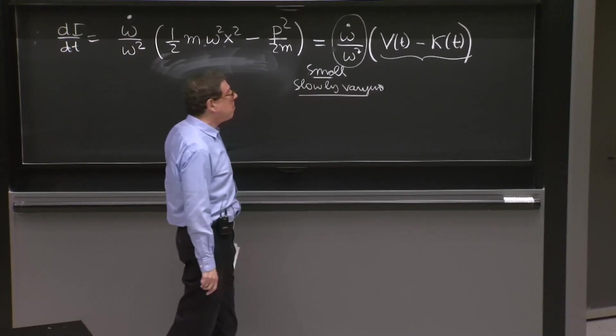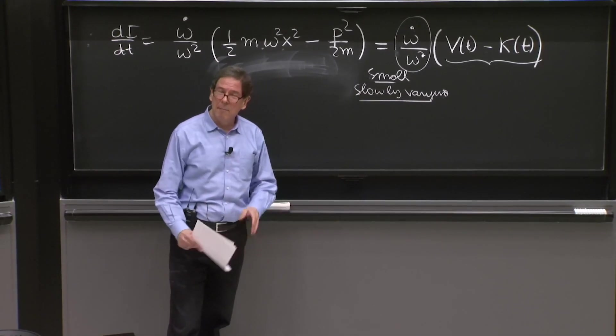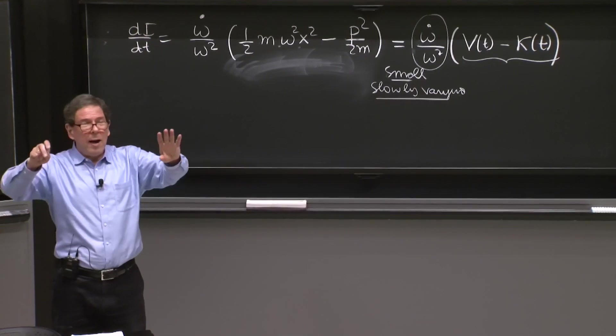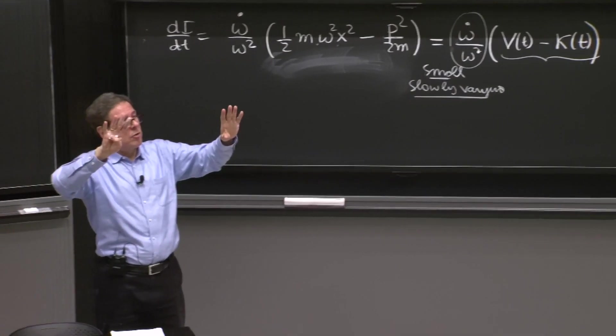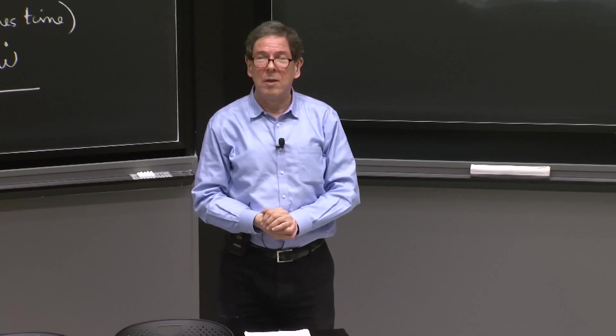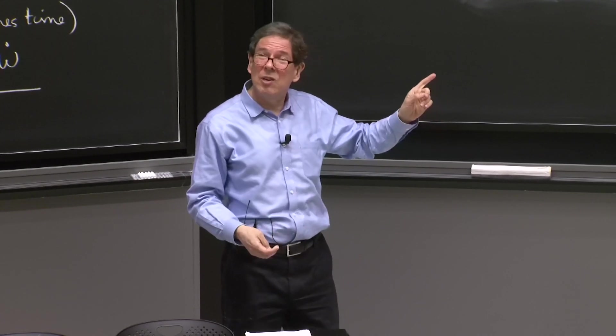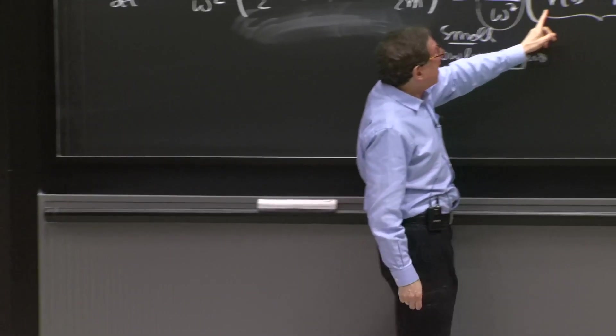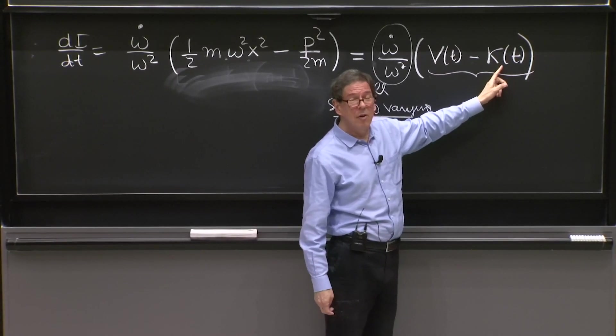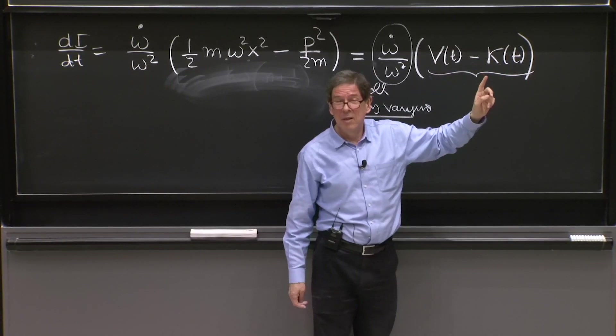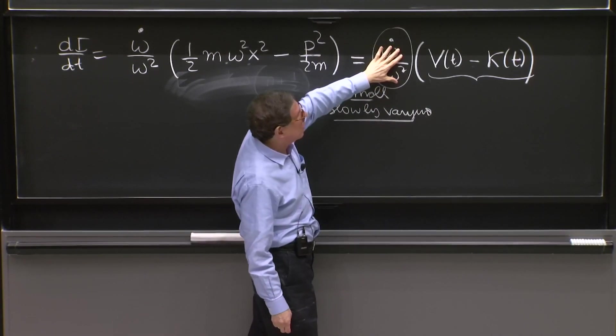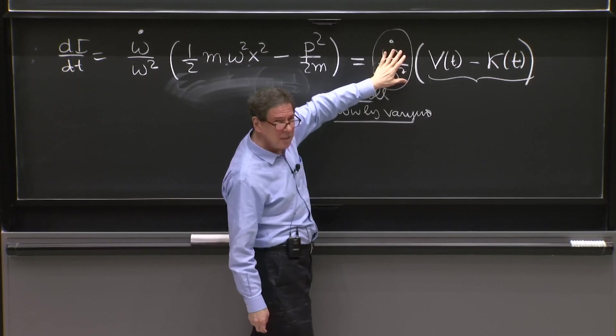But now, you probably remember this fact about the harmonic oscillators. While the potential and kinetic energies oscillate, their averages are the same. So that's how this term is going to help you. The average of this quantity is roughly zero over any period. And over a period, this quantity changes little. So this is going to help us.